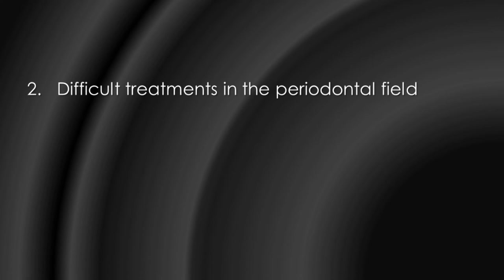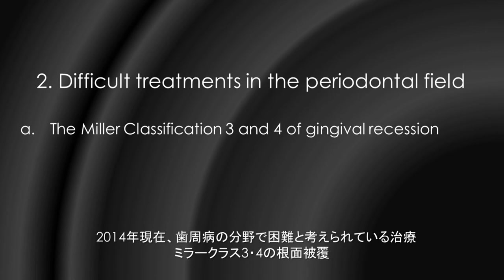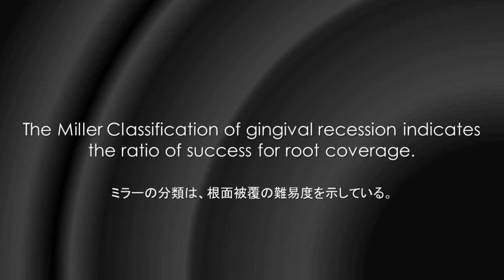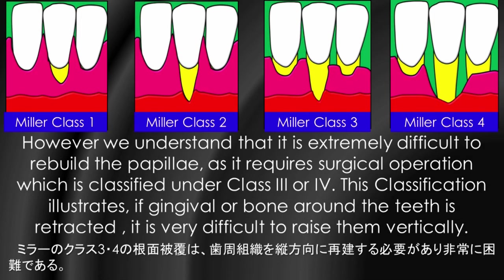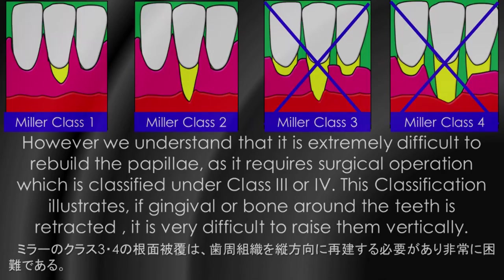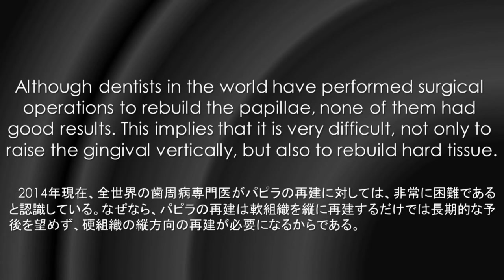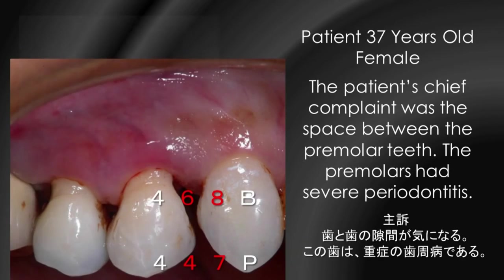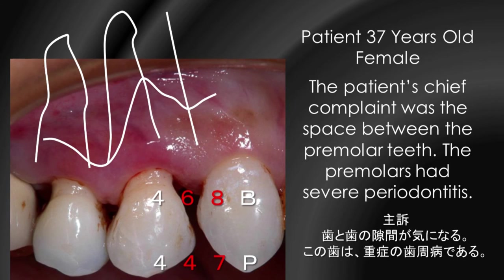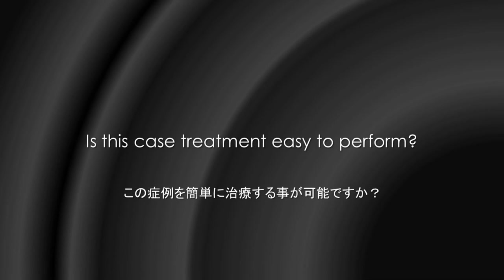Number 2: difficult treatment in the periodontal field — the Miller classification 3 and 4 of gingival recession. The Miller classification of gingival recession indicates the ratio of success for root coverage. However, it is extremely difficult to rebuild the papilla, as it requires a surgical operation classified under class 3 or 4. This classification illustrates that if the gingival tissue around the teeth is retracted, it is very difficult to raise them vertically. Although dentists worldwide have performed surgical operations to rebuild the papilla, none of them had good results. This patient is a 37-year-old female whose chief complaint was the space between her primary teeth — the primary teeth had severe periodontitis.